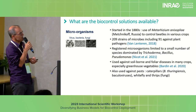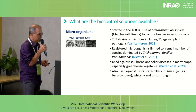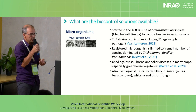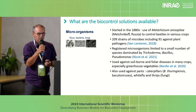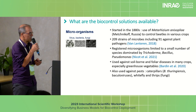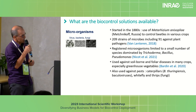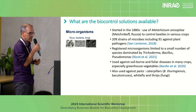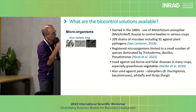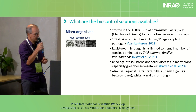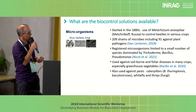These microorganisms are used against soil-borne and foliar diseases in many crops, especially in greenhouse vegetables. They are also used against pests such as caterpillars, whiteflies, and thrips — for example, using Bacillus thuringiensis, Baculovirus, or some fungi.